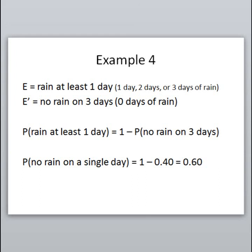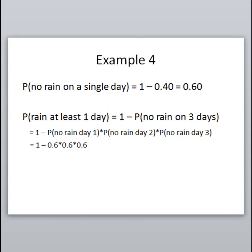The complement tells us that the probability of rain on at least one day equals 1 minus the probability of no rain on all three days. We first need the probability of no rain on a single day. The problem told us the probability of rain is 0.4, so the probability of no rain on one day is its complement: 1 minus 0.4, which gives us 0.6. So the probability it rains is 40% and the probability it doesn't rain is 60%.